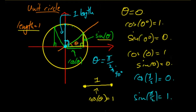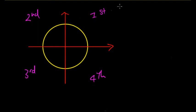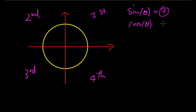The unit circle is useful because you don't have to memorize as much — you can reason back to it. Another useful application is working out whether sine or cos is positive or negative. The circle is divided into four quadrants: first, second, third, and fourth. In the first quadrant, both sine theta and cos theta give positive results.